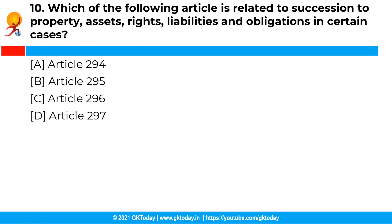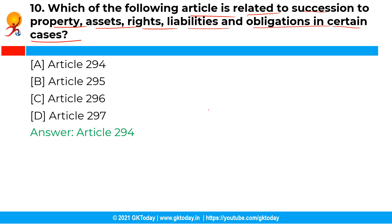The next question is: which of the following articles is related to succession to property, assets, rights, liabilities and obligations in certain cases? The correct answer is option A, Article 294. Article 294 of the Constitution of India relates to succession to property, assets, rights, liabilities and obligations in certain cases. Articles 294 to 300 in Part 12 of the Constitution of India deal with property, contracts, rights, liabilities, obligations and suits of the Union and the states.